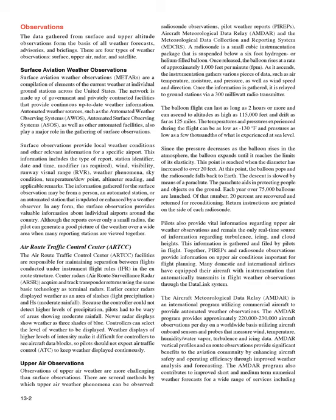Earlier center radars displayed weather as an area of slashes (light precipitation) and H's (moderate rainfall). Because the controller could not detect higher levels of precipitation, pilots had to be wary of areas showing moderate rainfall. Newer radar displays show weather as three shades of blue. Controllers can select the level of weather to be displayed. Weather displays of higher levels of intensity make it difficult for controllers to see aircraft data blocks, so pilots should not expect ATC to keep weather displayed continuously.